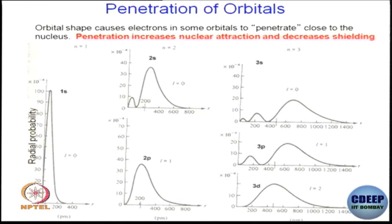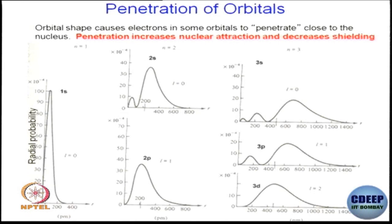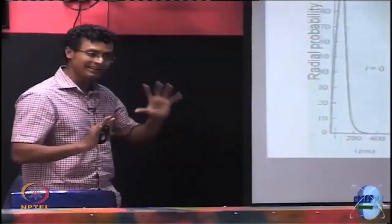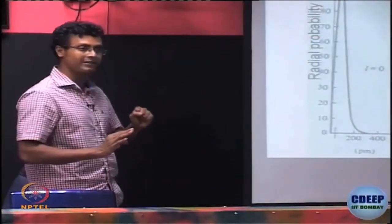If you look at the 3s electron, one more node is added, and you can see this. If you compare 2s versus 2p, you can further see that 2s has some component very close to the nucleus, whereas 2p does not have that much component very close to the nucleus. So penetration actually means how much these orbitals are contributing towards, or how close they are to, the nucleus. As you can see, 1s is very close to the nucleus, and thereby the penetration of 1s is going to be the maximum — it can neutralize the positive charge most efficiently.